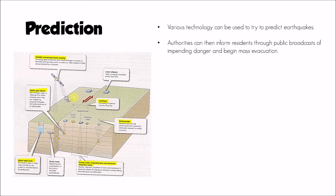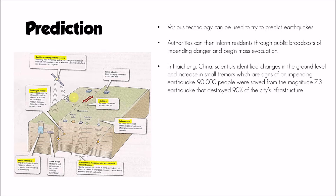Authorities could then use this information to inform residents through public broadcasts, alerting them to danger and starting evacuations. This was evidenced in Haicheng, China, where 90,000 people were evacuated in advance of a magnitude 7.3 earthquake that destroyed 90% of the city's infrastructure — a good example of where prediction has worked to save lives.